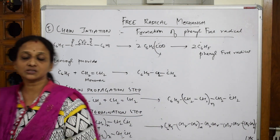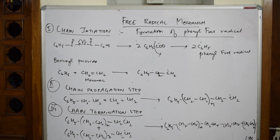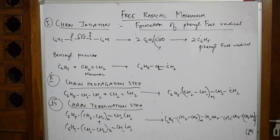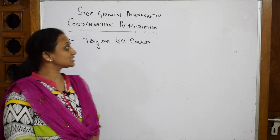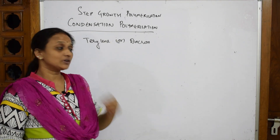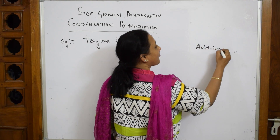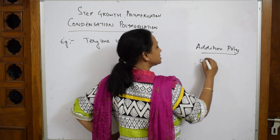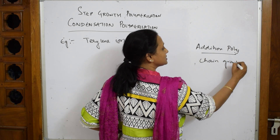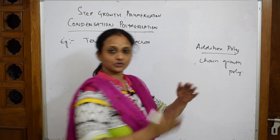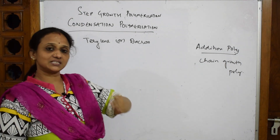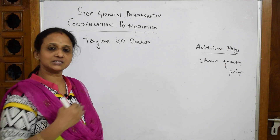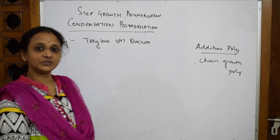This completes chain initiation, propagation, and termination. After addition polymerization, the next type is condensation polymerization. Addition polymerization is called chain growth polymerization because steps follow one after another - initiation, propagation, termination. Condensation polymerization is called step growth polymerization, where there is no link between one step and the next.